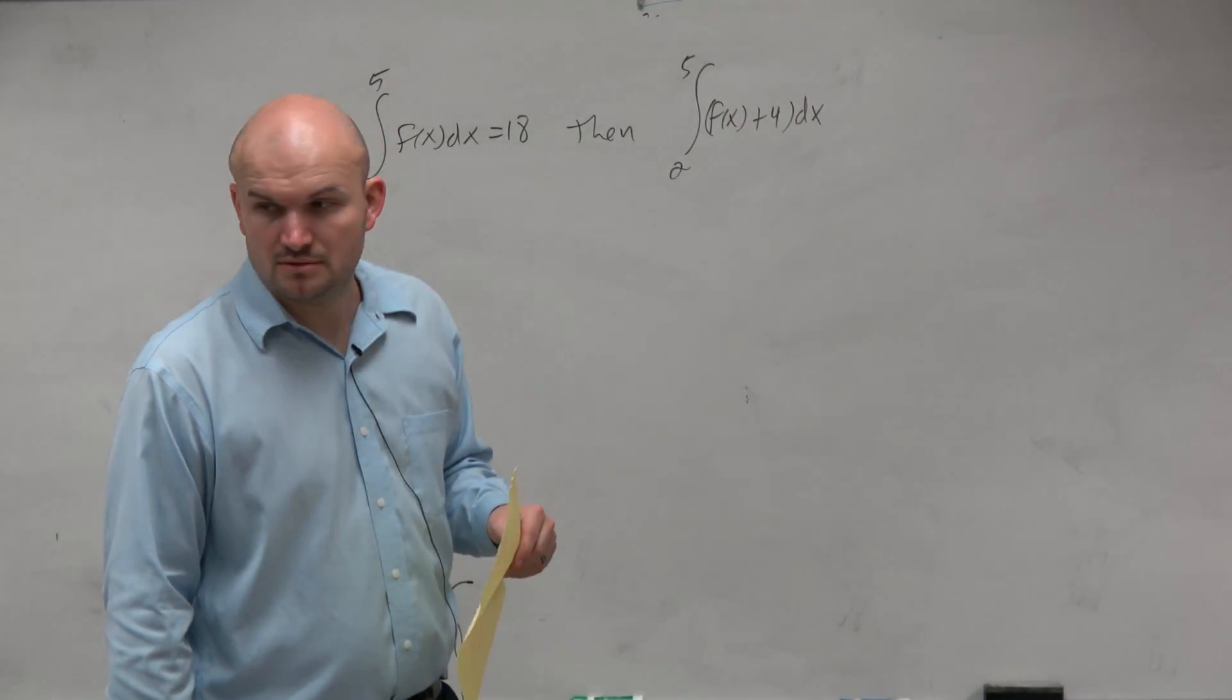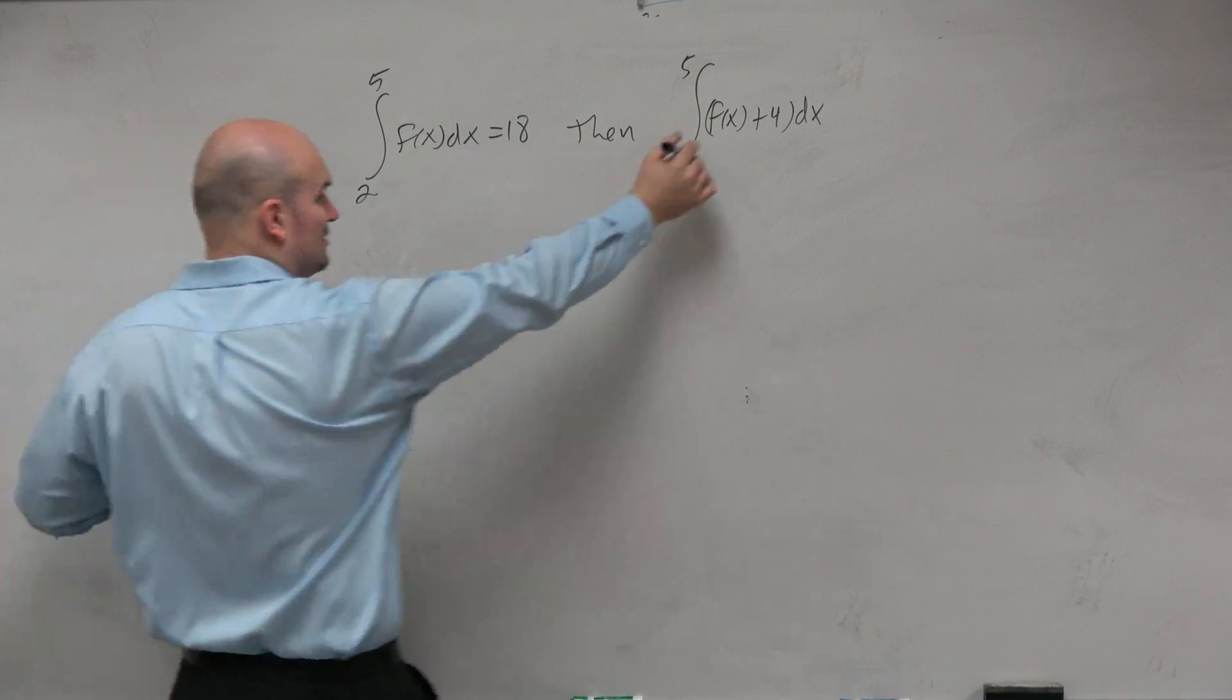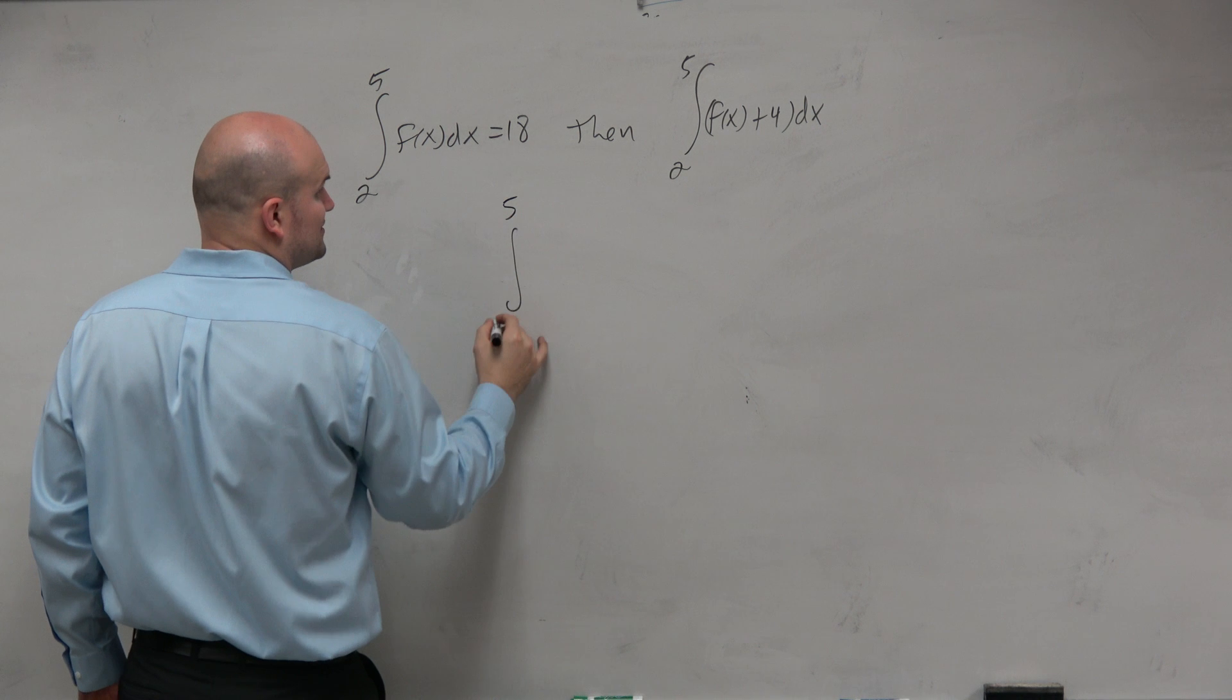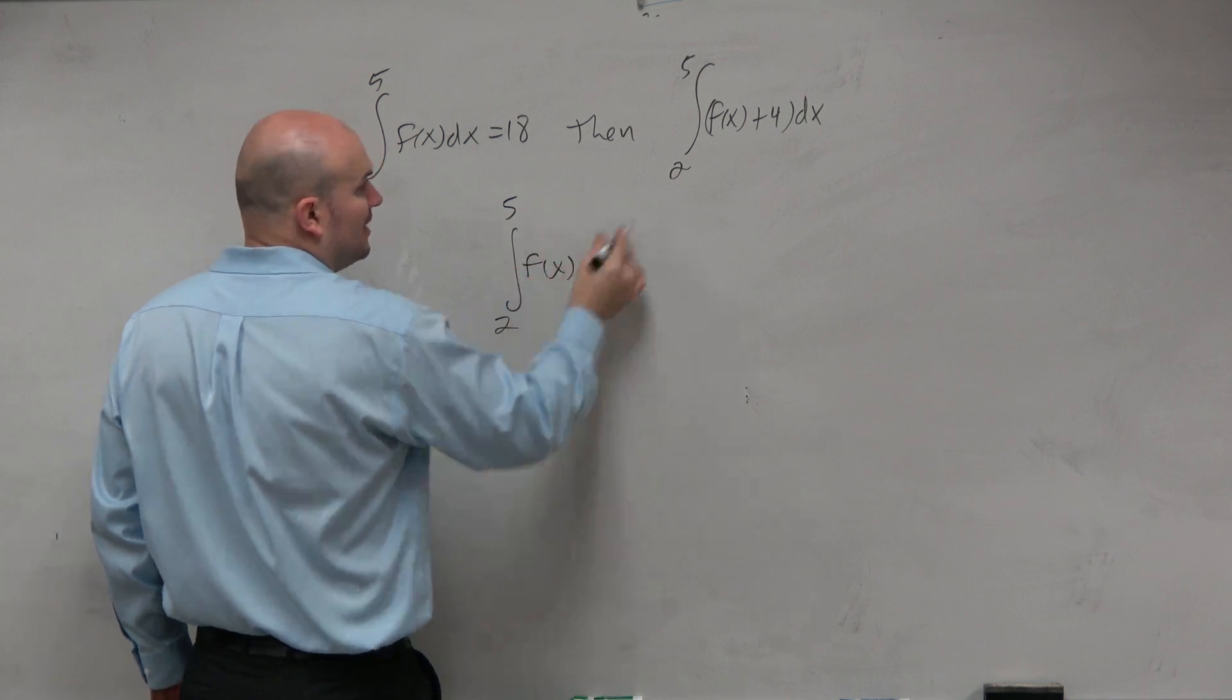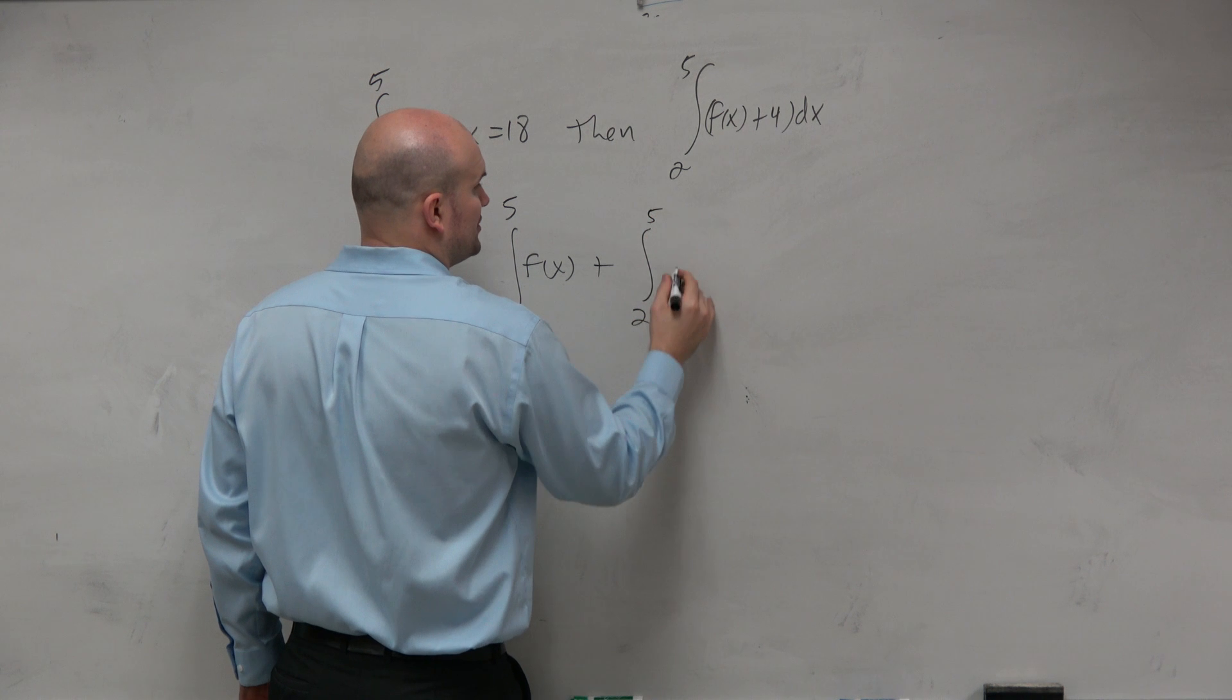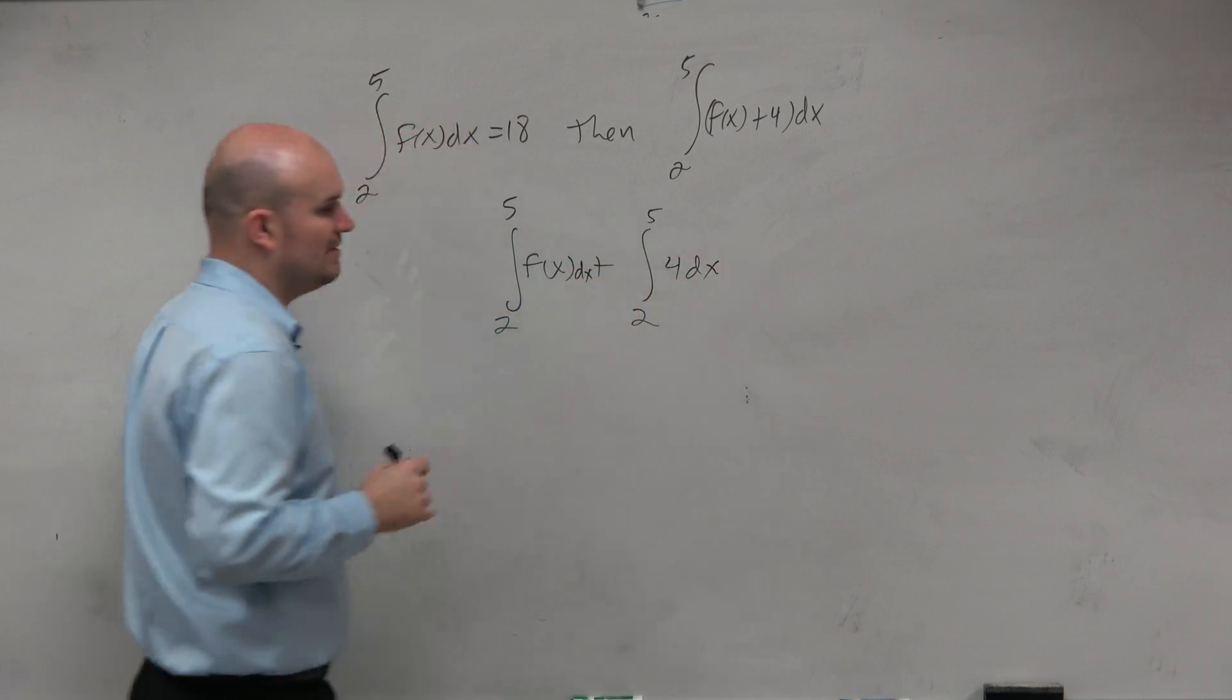22. Okay, well, if we want to find from 5 to 2, guys, we know that we can represent here. So we have 5 to 2 of f of x, and then we can distribute this to be plus 5 to 2 of 4. And then, again, forget the dx here. Right?